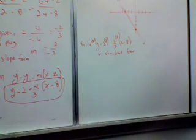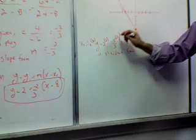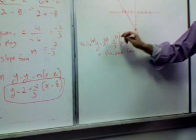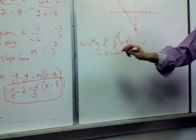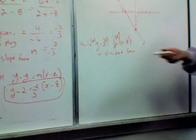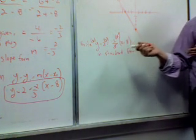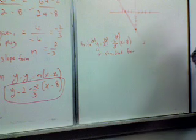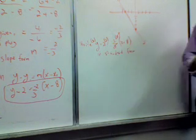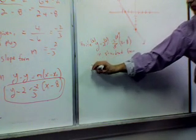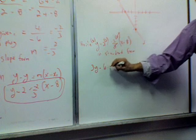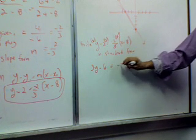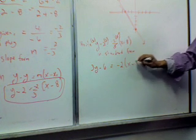So the 3 cancels, right? This 3 cancels with that. And that's the whole purpose of multiplying by 3. That was the whole reason for it. And then these here, don't forget, you have to do them all. This becomes 3y minus 6 equals, we still have negative 2 there, negative 2 times x minus 8.